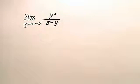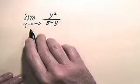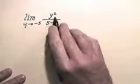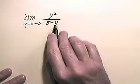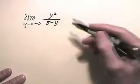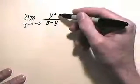Here we have the limit as y approaches negative five of y squared divided by five minus y. So when I look at this expression, I see right off what I'm dealing with is a quotient of two expressions, and so consequently I want to think of the quotient rule.